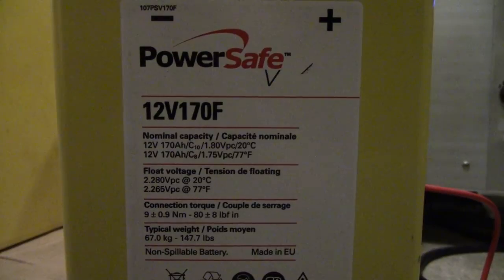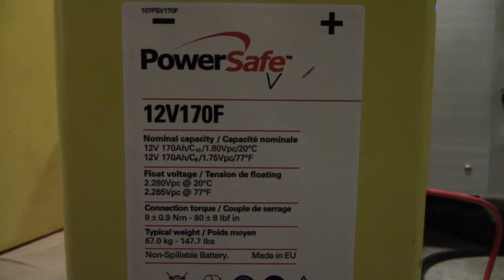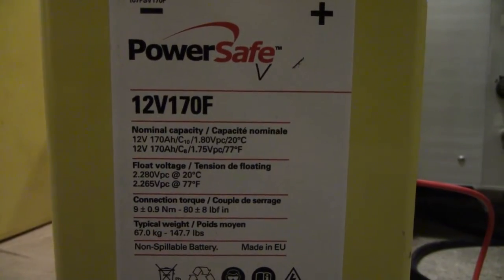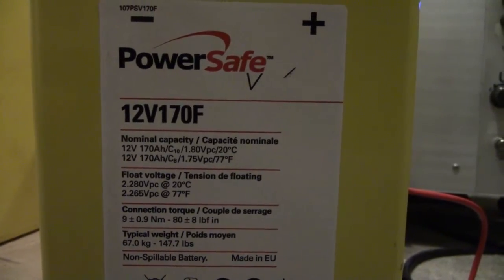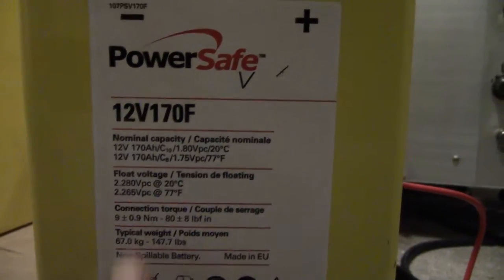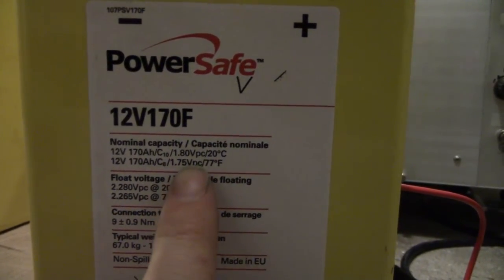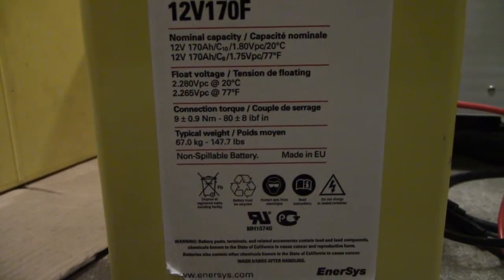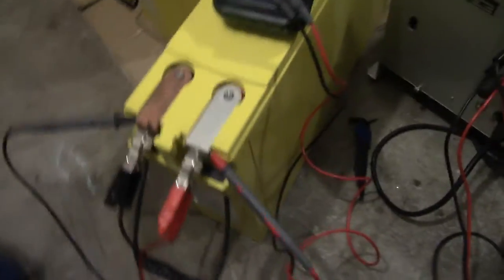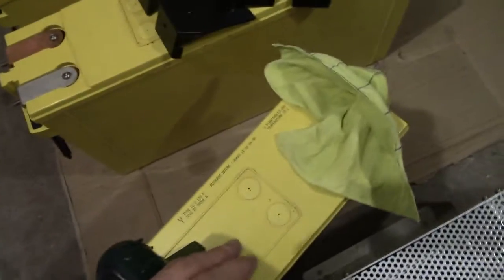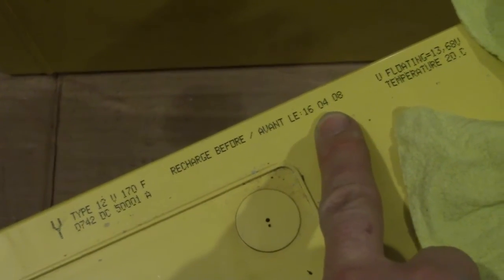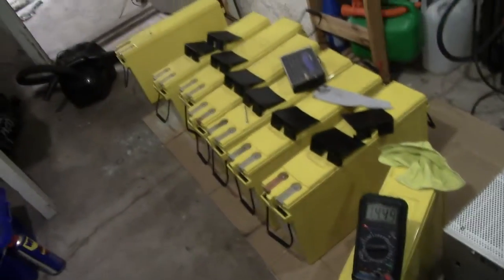With that out of the way, we can consider what kinds of batteries these actually are, and they certainly aren't shabby. They're obviously PowerSafe 12V170F, which are 12V 170Ah batteries rated at both the 10 and 8 hour rate at 1.8 to 1.75 volts per cell respectively, and weighing in at 67 kilos. Now, something that's particularly impressive about these batteries is the charge by stamp. These batteries are from 2008, so they are only 7 years old, which is not too bad for 12-year rated batteries.